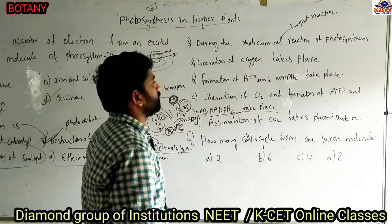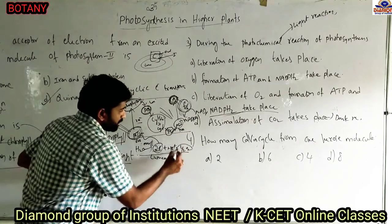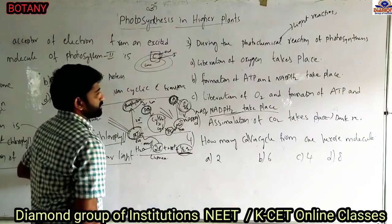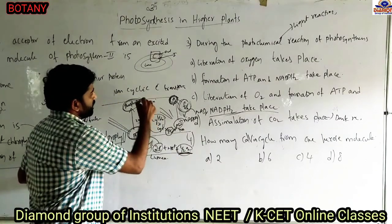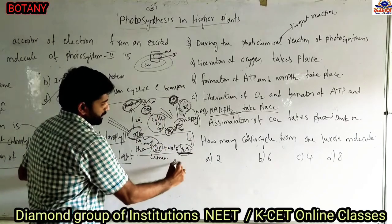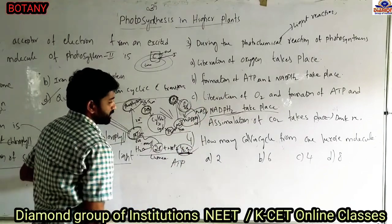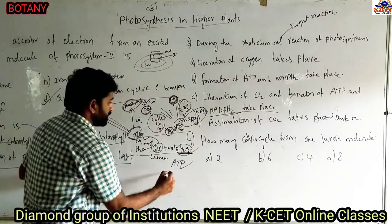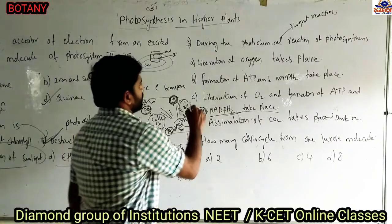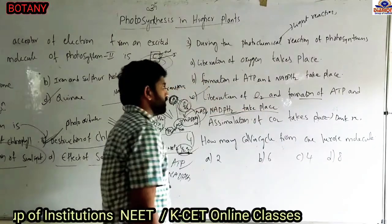The light reaction includes liberation of oxygen, formation of ATP, and NADPH2 molecules. In the non-cyclic electron transport system, oxygen liberation takes place. By the movement of electrons into plastoquinone, photophosphorylation produces ATP, and NADPH2 molecules are also produced. So oxygen liberation, synthesis of ATP, and production of NADPH2 take place in the light reaction. Answer: liberation of oxygen and formation of ATP and NADPH2 molecules.